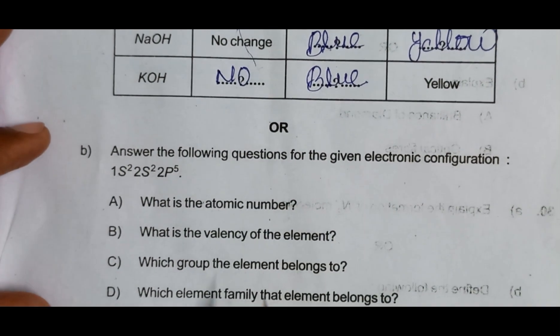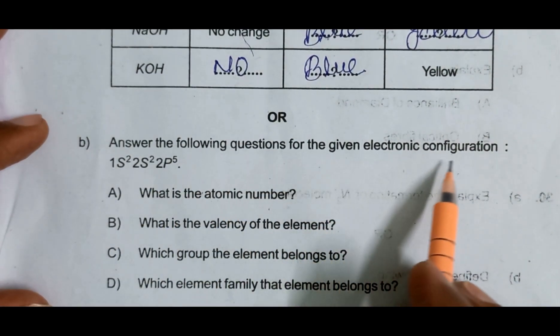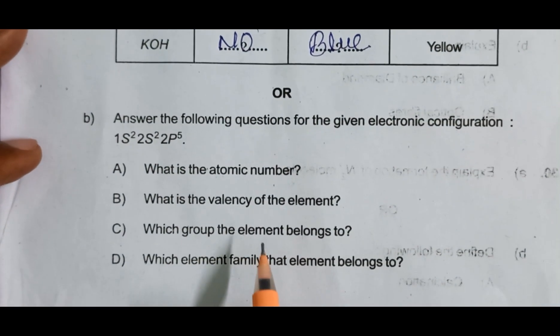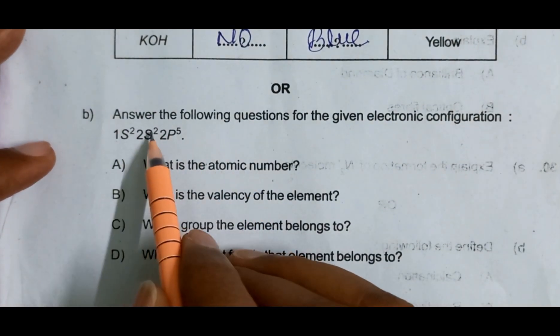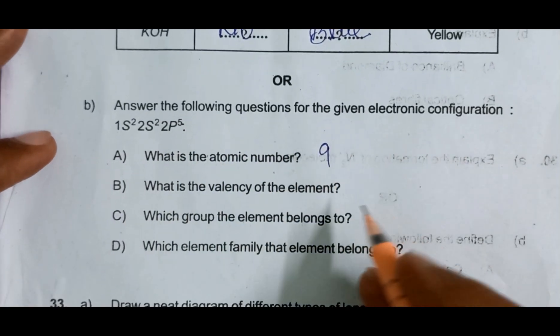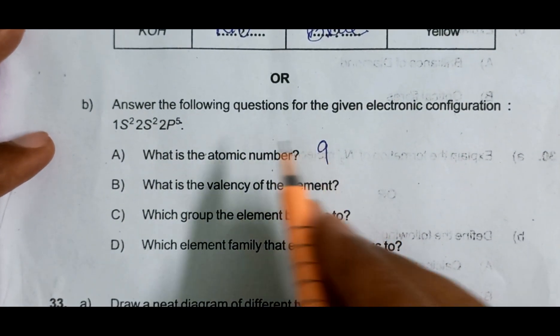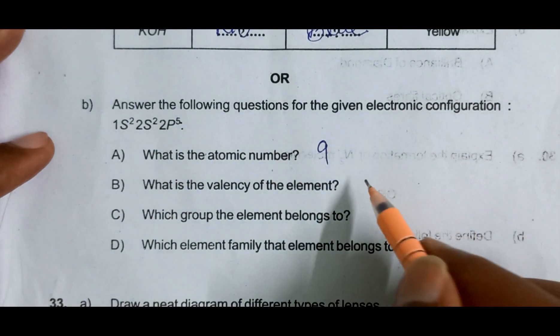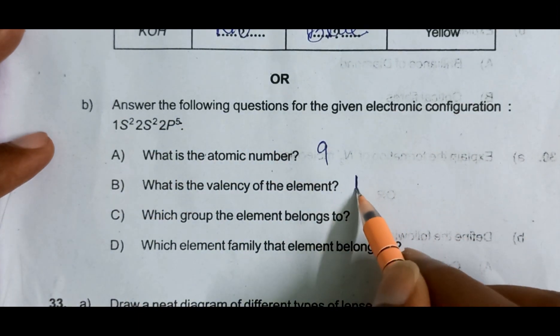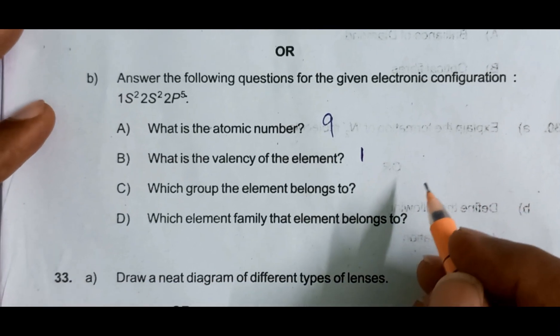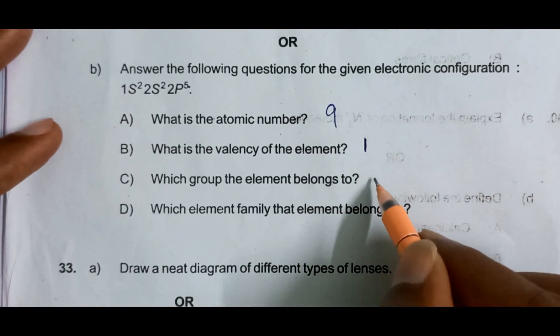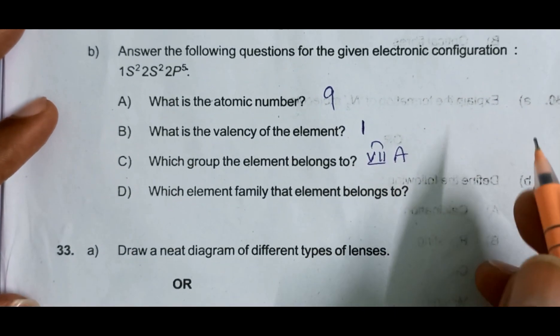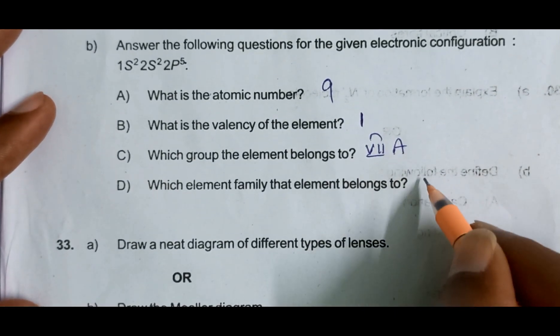Answer the following questions for the given electronic configuration, classification of elements. Atomic number 2, 4, 5 equals 9. What is the valency of the element? In the valency shell, 2 and 5 equals 7, valency is 1. Group number: this is group 7. The element family belongs to halogen family.